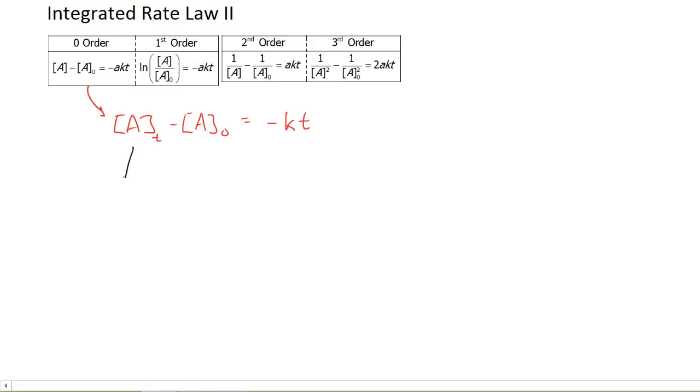I'm going to rearrange this. I'm going to get the concentration, whatever format it's in, all by itself on one side. And when I do this, I can notice that it looks like the equation for a line: Y equals M times X plus B, where the time is my X variable and the concentration is my Y variable.